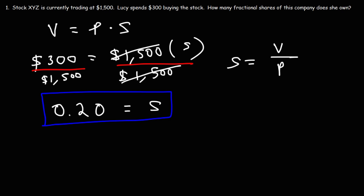She owns 0.2 shares of stock XYZ, which means she owns 20% of one share. If you were to own 0.45 shares, that means you own 45% of one single share.